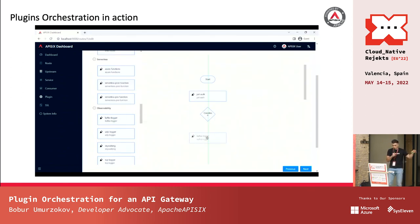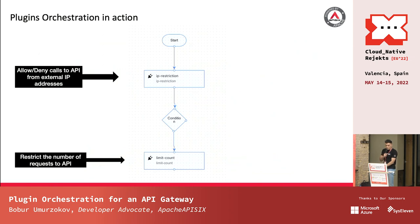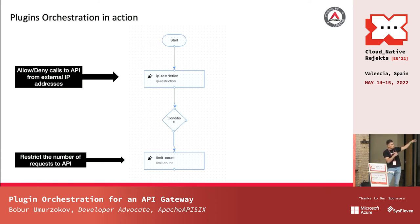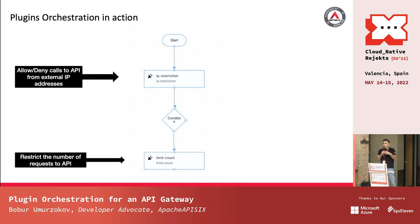As you can see, the APISIX dashboard lists currently available plugins on the left side, and from the dashboard you can easily drag and drop existing plugins to arrange them. We can also download the JSON structure of it. Here are some simple scenarios, like restricting API calls from external IP addresses using the IP restriction plugin, and for internal calls restricting the number of requests to the API. You can also create very comprehensive plugin orchestrations with the help of the dashboard.